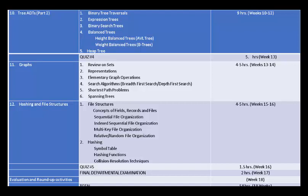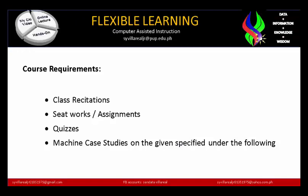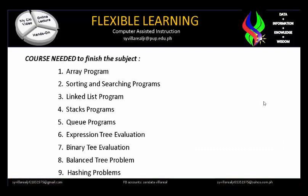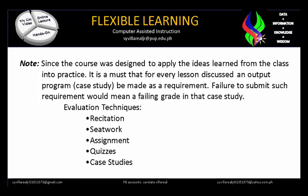The course requirements include cluster stations, sit-work, assignments, quizzes, and machine case studies. Due to the pandemic, these may be modified as much as possible. It is not hard to finish the requirements in this course. Programs required to finish the subject include: RE Program, Sorting and Searching Program, Linked List Program, Stack Program, Queue Program, Expression Tree Evaluation, Binary Tree Evaluation, Balance Tree Problems, and Hashing Problems. Note: since the course is designed to apply ideas learned in class, an output program or case study is required for every lesson. Failure to submit such requirements would mean a failing grade in that case study.